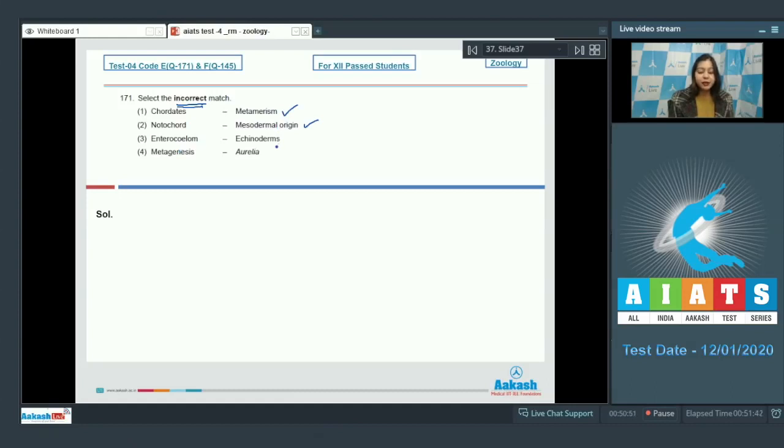Enterocoelome is present in echinoderms. This is also correct. And metagenesis is exhibited by Aurelia. This is incorrect as metagenesis is alternation of generations. That is the presence of two life forms which are polyp and medusae. And this is exhibited by Obelia.